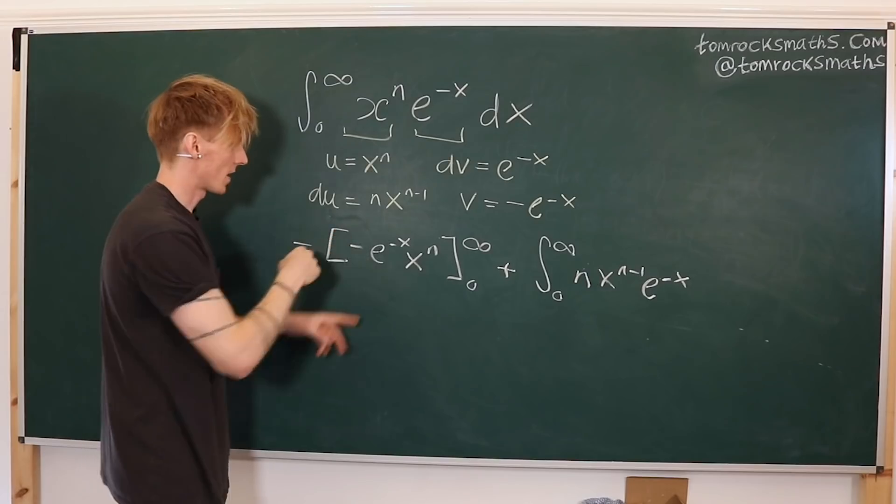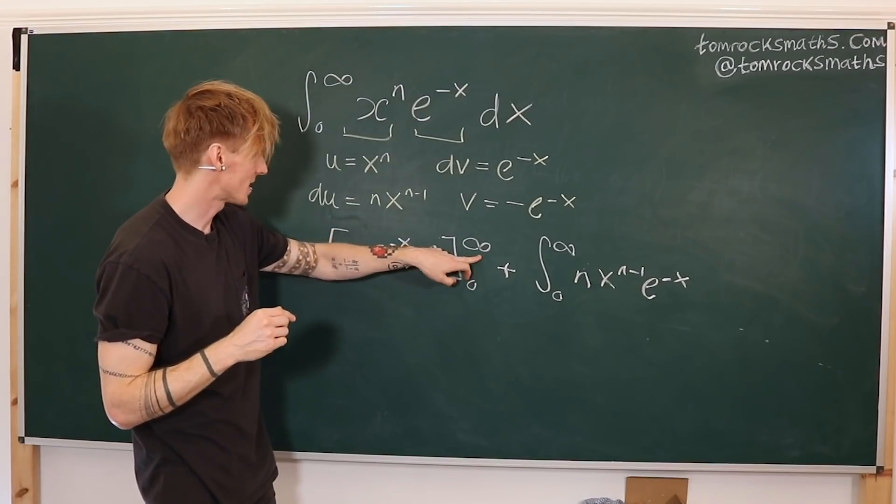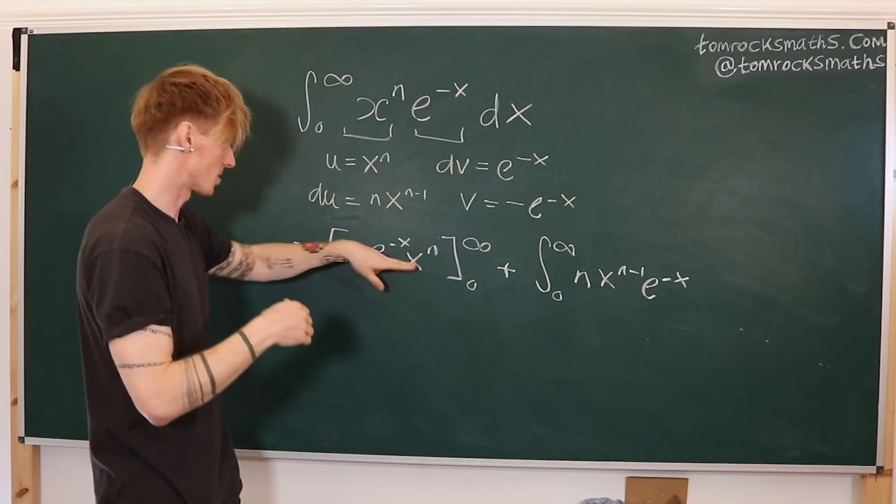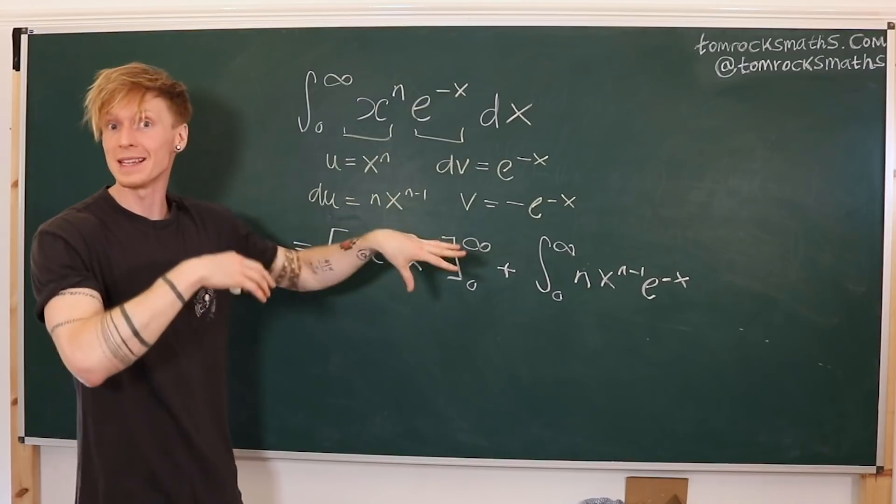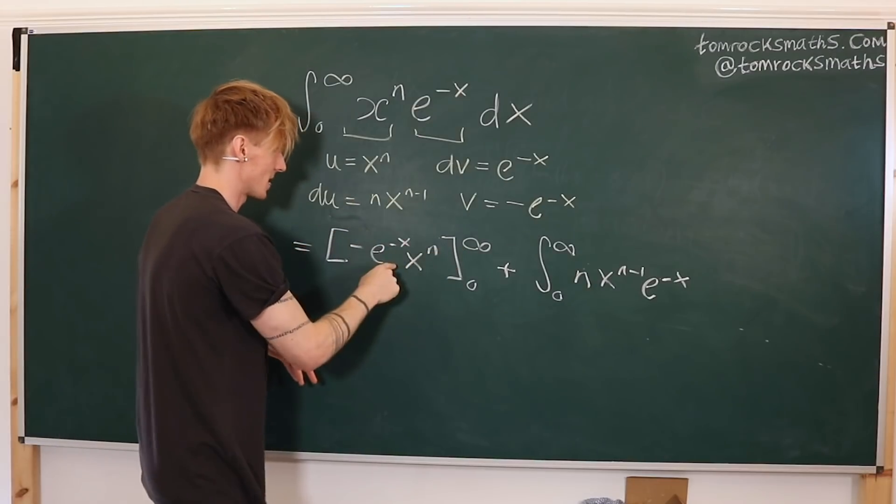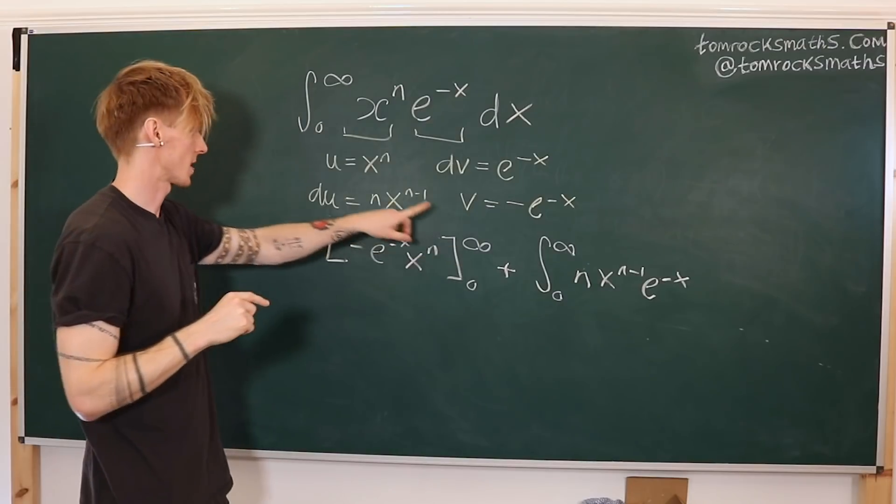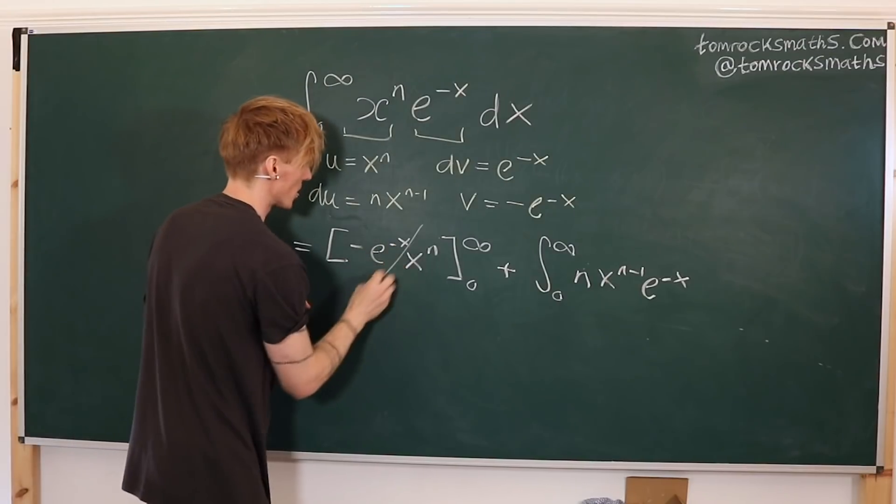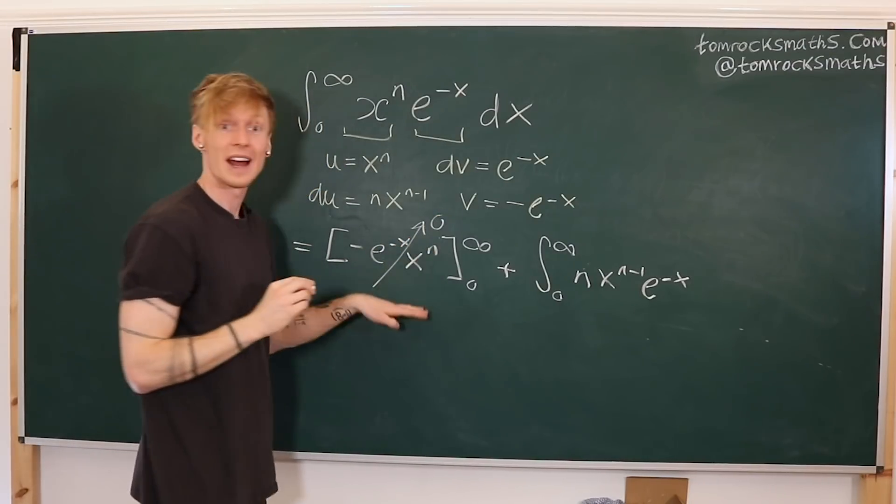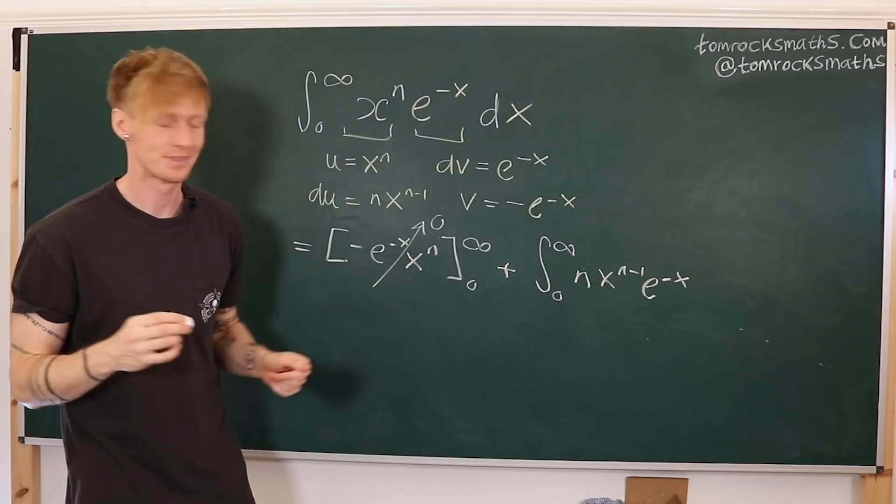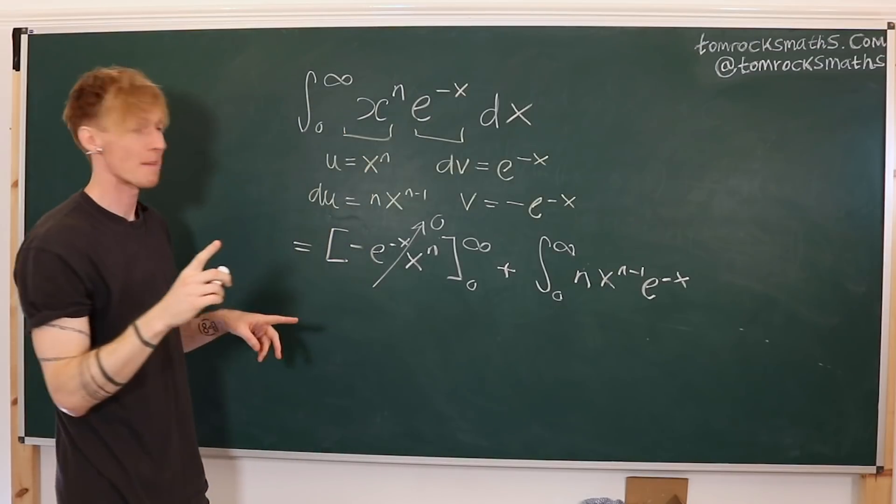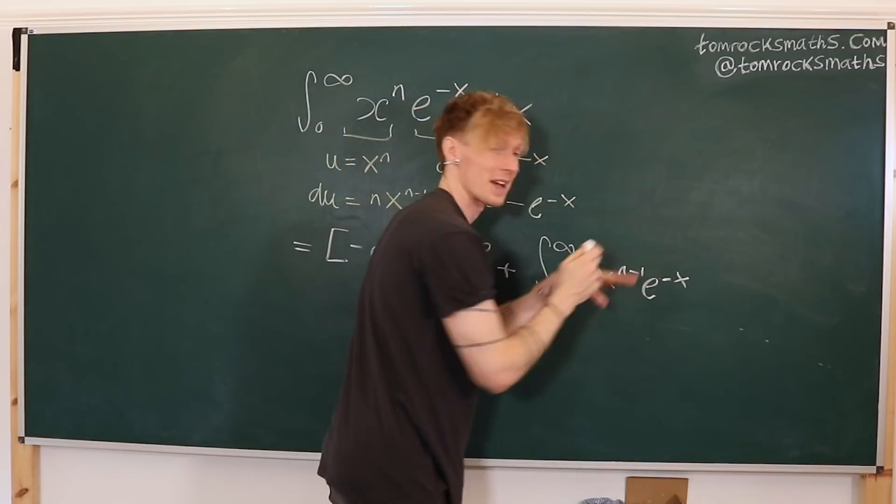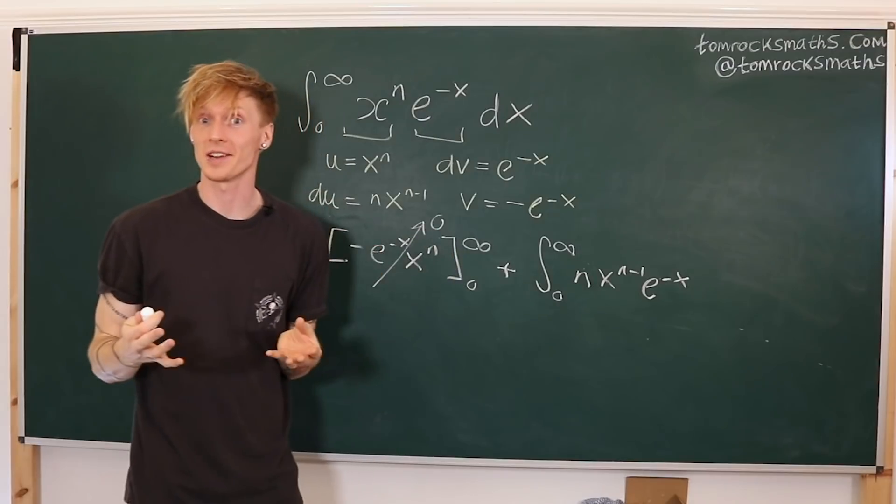Now if we evaluate these limits, if I plug in infinity, the exponential is e to the minus infinity, so that goes to 0, that kills the polynomial. Exponents beat polynomials, so that's 0. And then if I plug in the limit of 0, the exponential is 1, the polynomial is 0, 0 times 1 is 0. So this whole term will actually vanish. And this will happen at every step, in fact. So what we've done after one step of integration by parts is bring down an n, x to a reduced power, and we have the same exponential function. So this is good. This is what we were hoping was going to happen.